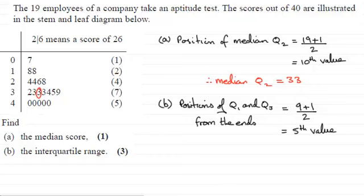So therefore, if we're finding Q1, we start at the lower end. This is the first value. So we've got 1, 2, 3, 4, 5. It's that 4 there. So that's going to give us the number 24. So therefore, Q1 is equal to 24.